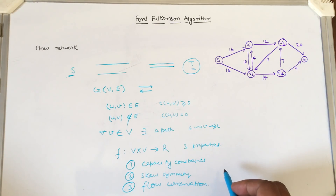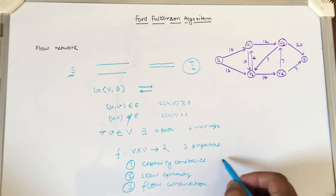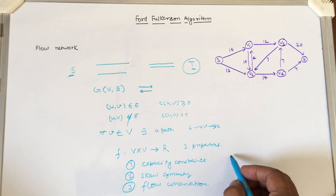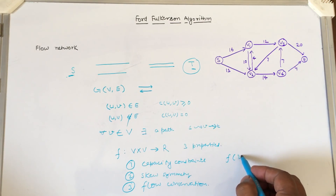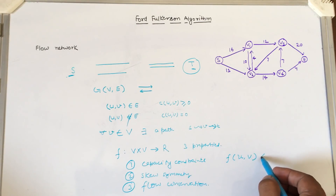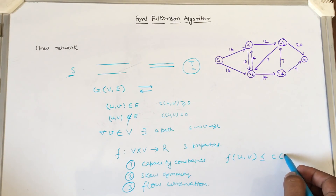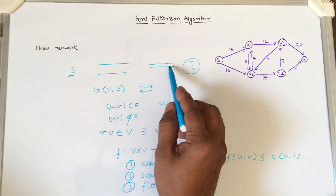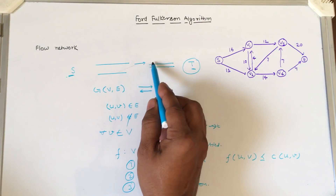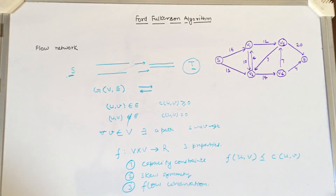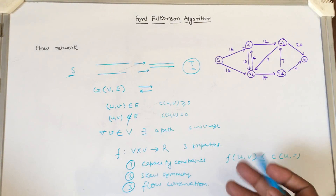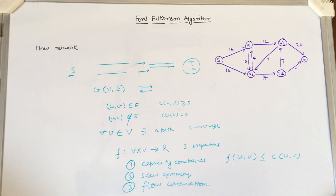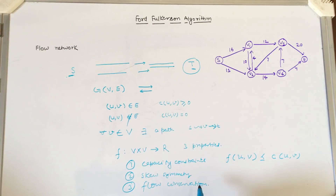The capacity constraint says that the flow F from vertex U to V must be less than or equal to the capacity of that edge. This is a feasible condition — if you have a pipe of a certain diameter, you cannot push a flow greater than that diameter allows. So the first constraint means you cannot put material greater than the pipe capacity.